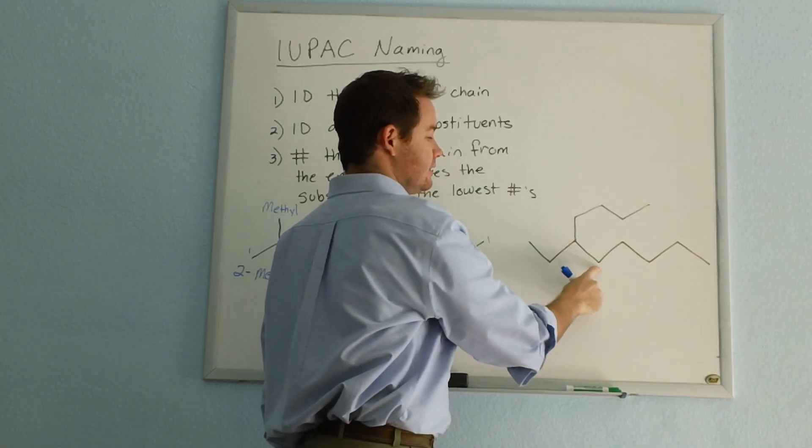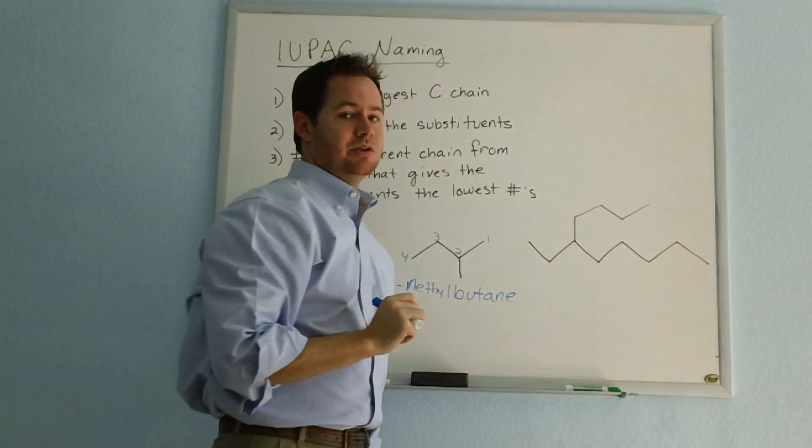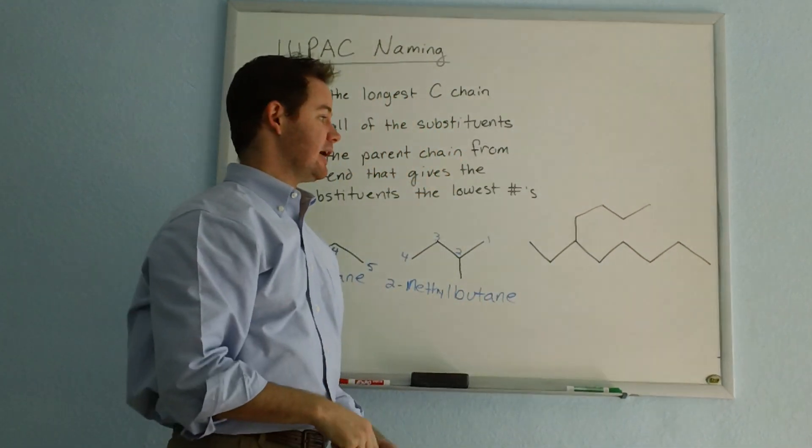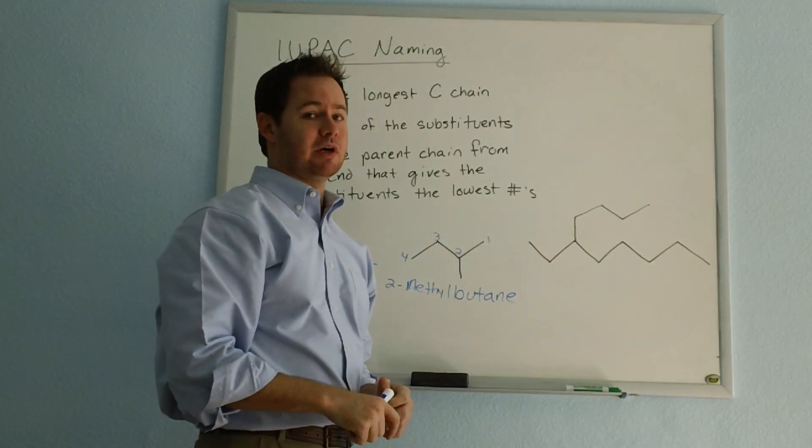three, four, five, six, seven, eight, nine, ten. So we would have ten carbons as our longest chain on that one rather than eight when we numbered strictly from left to right.